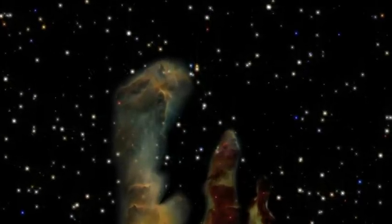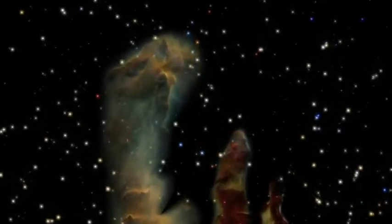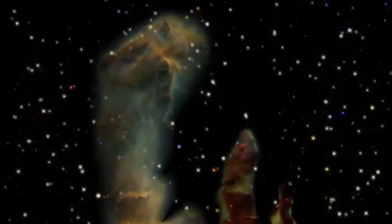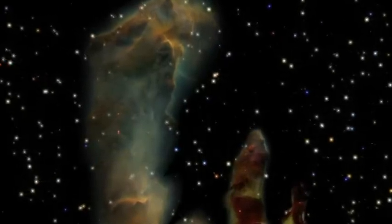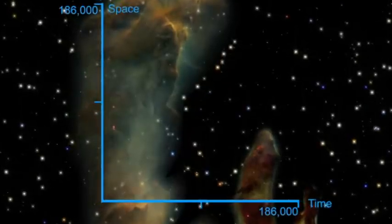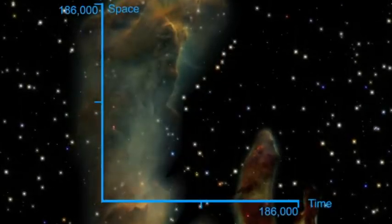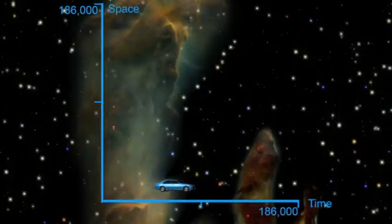Space and time can be thought of in the same way. Everything in the universe is traveling through space and time at the speed of light. The maximum speed available. Picture time replacing east and space replacing north in the car example. If you are sitting still in space, not going north, you are traveling at the maximum speed through time, east.